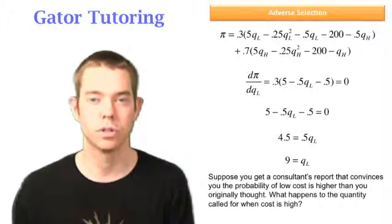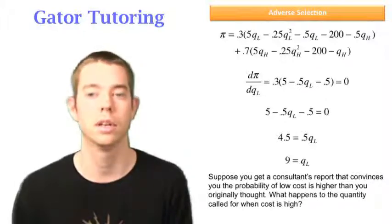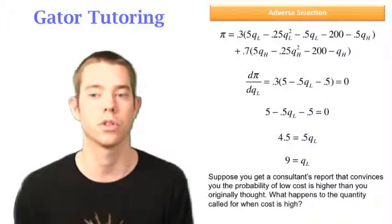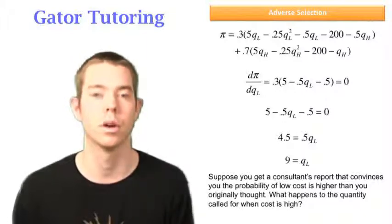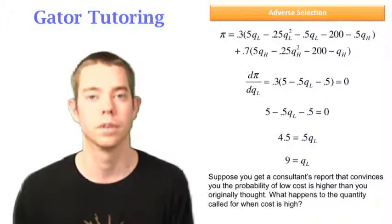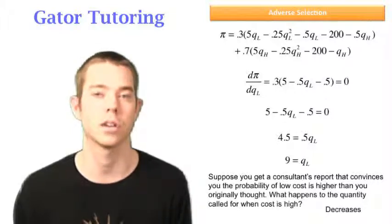If you're ever confused, just work it out. Solve for QH with .7 in front of the high-cost job and .3 in front of the low-cost job. And then change those to .9 and .1, and then solve for QH again. What you'll notice is the answer for this question is it decreases. The quantity for the high-cost job is going to decrease.